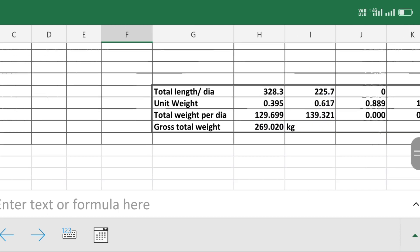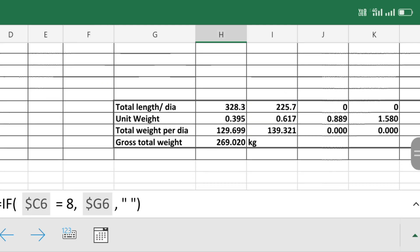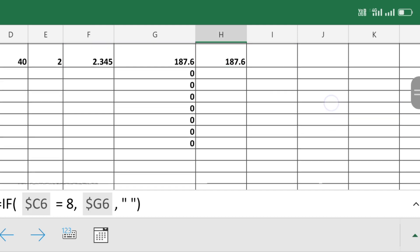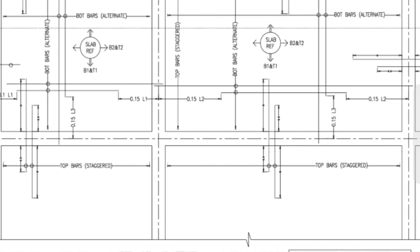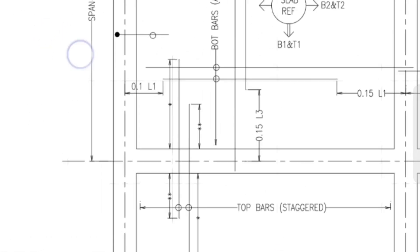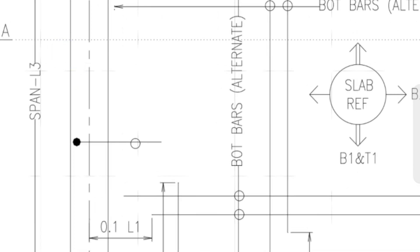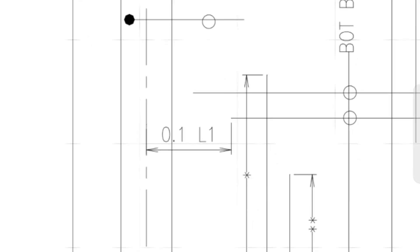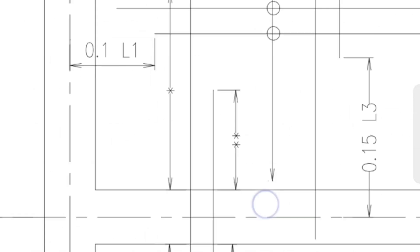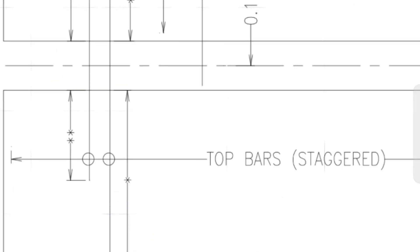Now I am going to show you the plan of the cut element reinforcement bar. Here you can see this is the drawing of the slab. This is the bottom bar provided in alternate arrangement. This indicates 0.1 into L. These are provided in staggered manner.